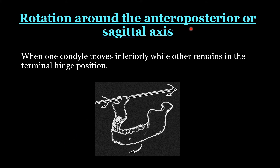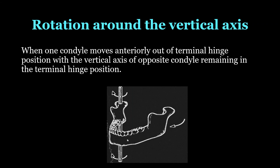The second is rotation around the anterior-posterior or sagittal axis, which is an imaginary axis running along the mid-sagittal plane. During this movement, the condyle on one side moves downward and medially while the other condyle remains in the terminal hinge position. Third is rotation around the vertical axis, which runs through the condyle and the posterior border of the ramus of the mandible. When one condyle moves anteriorly out of the terminal hinge position, the other remains in the terminal hinge position; the mandible rotates around this axis during lateral movements.